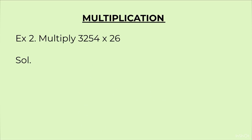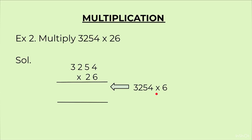One more example: here we are multiplying a 4-digit number 3254 by 26. For the first line of answer we multiply 3254 × 6. We start: 6 fours are 24, carry 2, write 4. 6 fives are 30, plus 2 is 32, carry 3, write 2. 6 twos are 12, plus 3 is 15, carry 1, write 5. 6 threes are 18, plus 1 is 19.